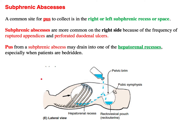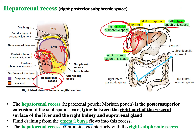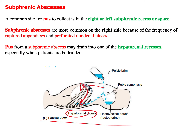In summary, the clinical significance of these subphrenic spaces is that infection or abscess can be distributed to the right or left anterior subphrenic space. When the patient is lying down, the abscess can move to the hepatorenal recess located posteriorly, and can move back when the patient lies down. That's it for this video — hope you find value in it, thank you.